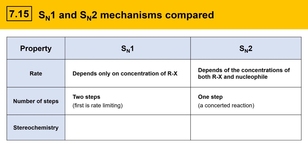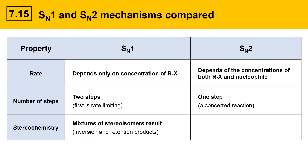The final property we'll take a look at is stereochemistry. In the SN1 mechanism, mixtures of stereoisomers result — you'll get inversion and retention products when the reaction occurs at a stereogenic center. In an SN2 reaction, complete inversion occurs. We call those reactions stereoselective.